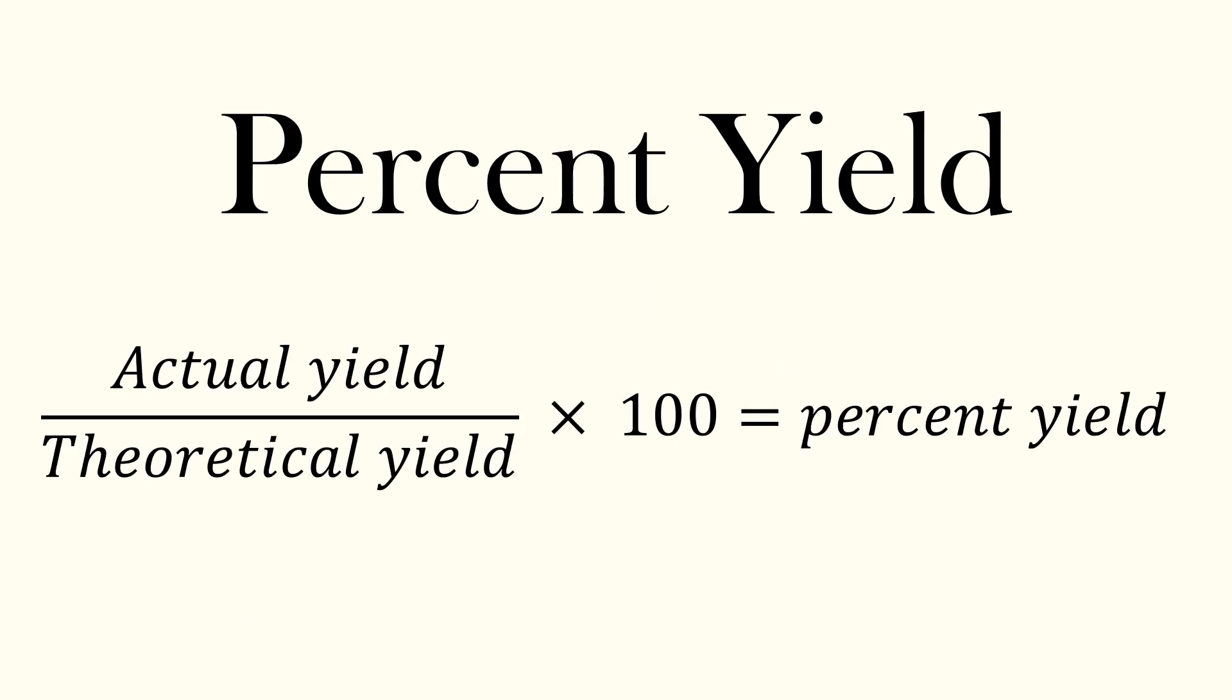We can take the ratio of these two to get a percent yield. A percent yield is calculated to test good lab technique or manufacturing efficiency. It is defined as the actual yield divided by the theoretical yield times 100.